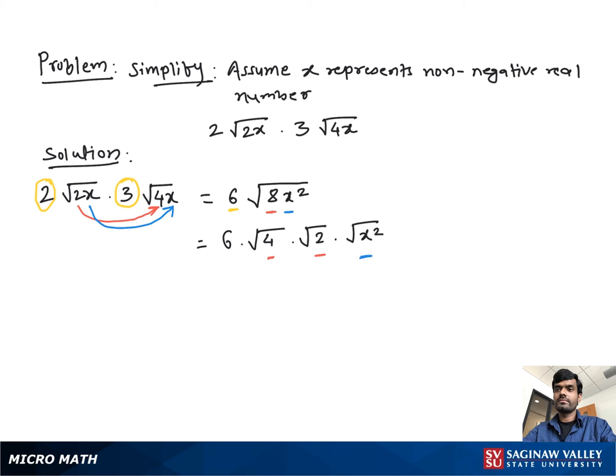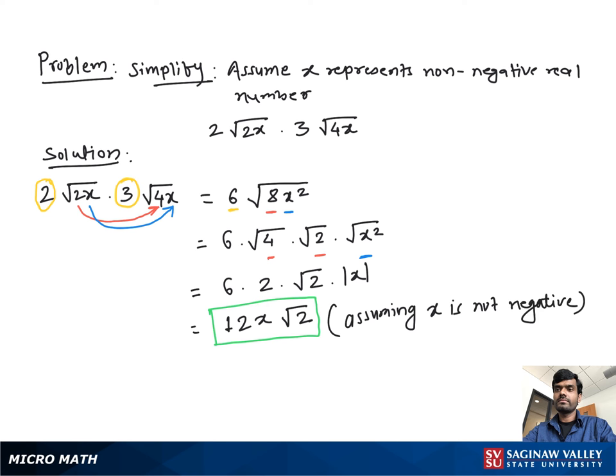Then we get 6 times square root 4 is 2 times square root 2 times absolute value of x, because x may be negative so we take absolute value. Then we get our final answer which is 6 times 2, 12x times square root 2 assuming x is not negative.